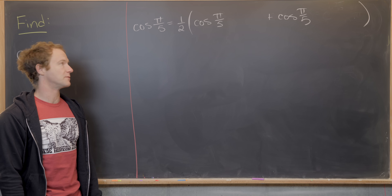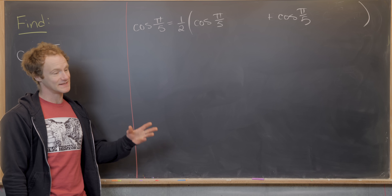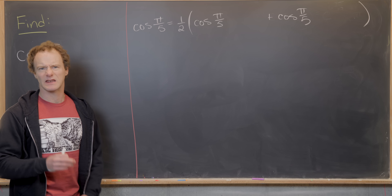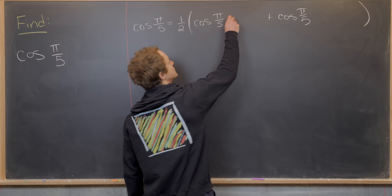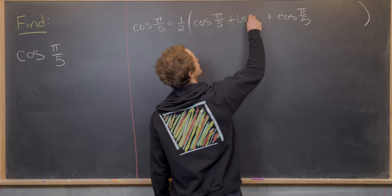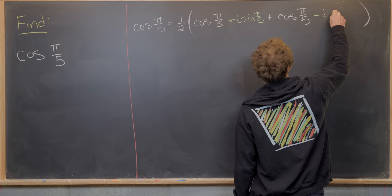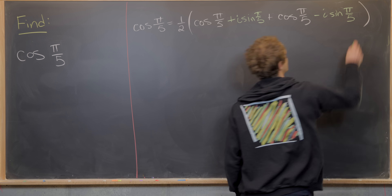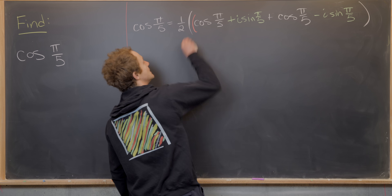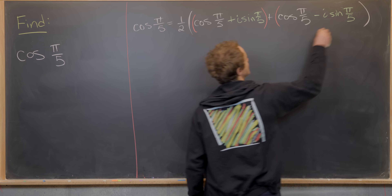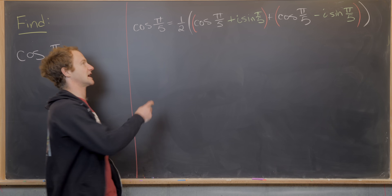Now we're going to do another old math trick: add 0. The version of 0 we add is chosen to make these cosine π/5 terms more reasonable to work with. We add i·sin(π/5) to one copy and subtract i·sin(π/5) from the other. Then we group these two pairs and apply Euler's formula to write them as complex exponentials.